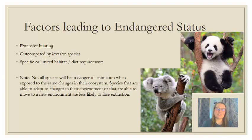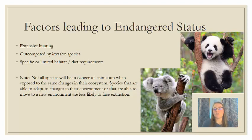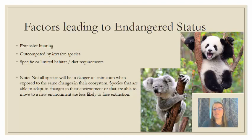Factors that lead to a species becoming endangered include extensive hunting or over-harvesting, competition with invasive species for space, food, and habitat, and having a very narrow diet or very limited habitat requirements. Examples are the giant panda and the koala, both of which have narrow diets and live in narrow habitat ranges. Not all species face extinction under these pressures — those with greater genetic diversity are better able to adapt, but a small population facing extra pressures is especially vulnerable.